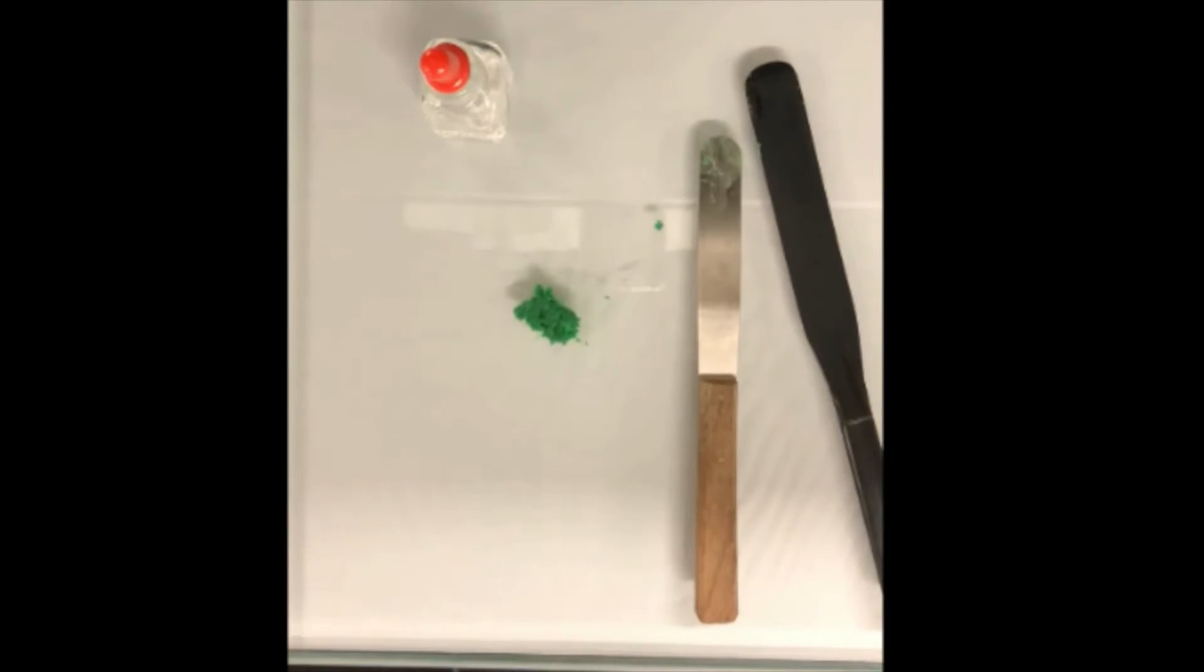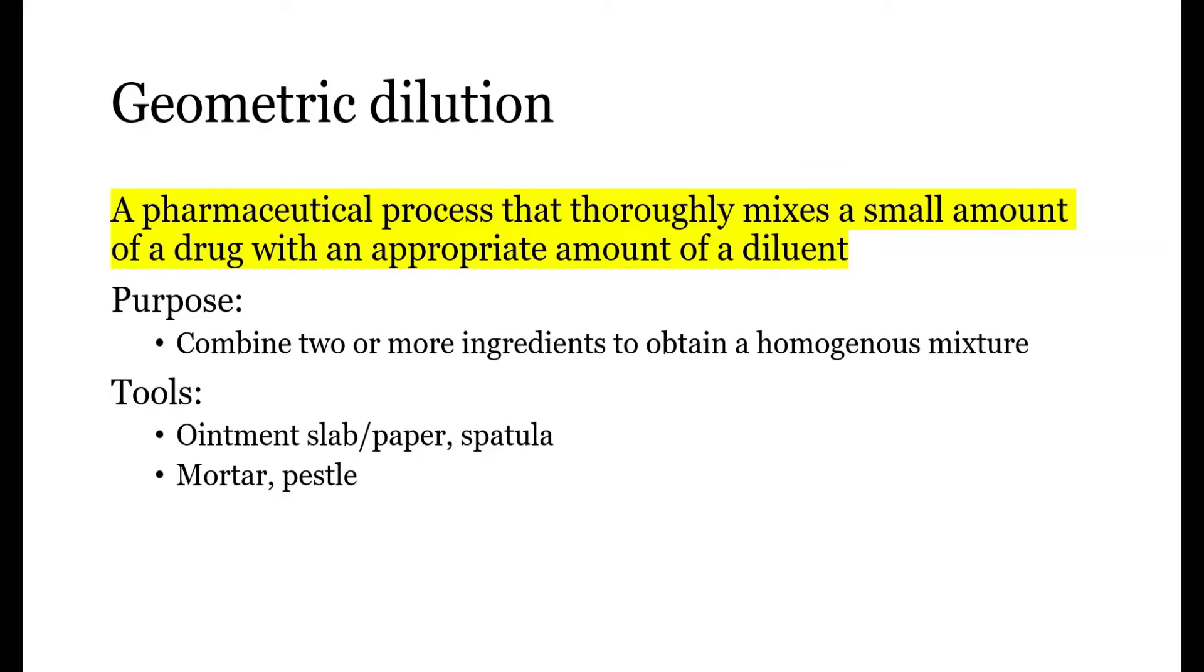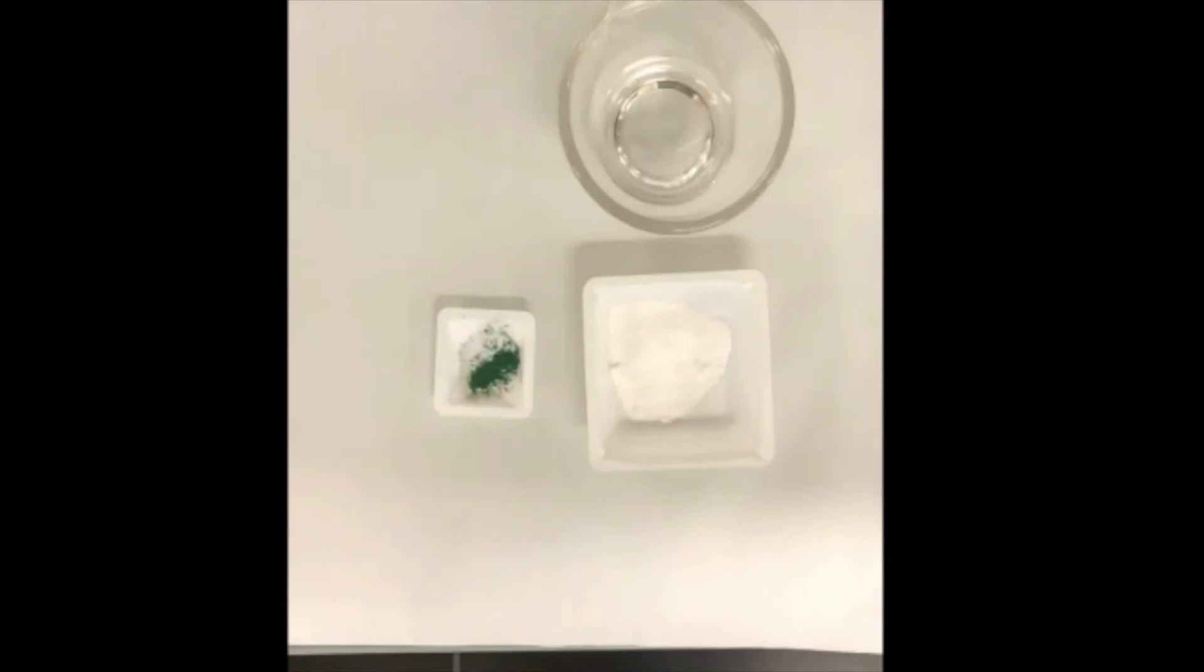So now it is ready for the next step geometric dilution. Geometric dilution is a pharmaceutical process that thoroughly mixes a small amount of a drug with the appropriate amount of diluent. The purpose of geometric dilution is to combine two or more ingredients to obtain a homogeneous mixture. It can be done by trituration or spatulation.